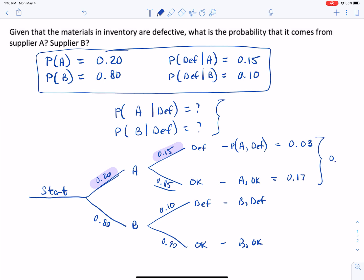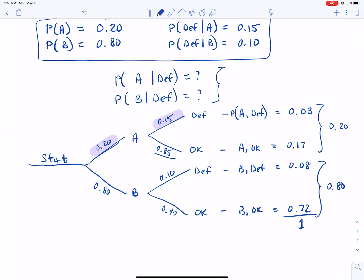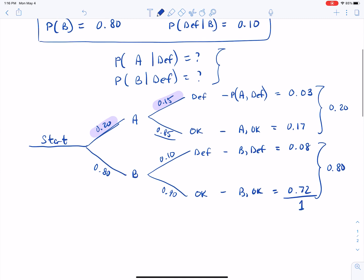Now notice right here, those add up to 0.20, which is significant also because that tells us how the 20% that came from A are broken down. 3% are defective and 17% are not. So following the same idea for B and defective and B and okay, 0.80 times 0.10 is 0.08. And as you could probably guess by now, this is 0.72, and just understand that this is how the 80% that come from B are broken up. And naturally, if you add these together, you get one, which is further emphasis that this is a whole sample space.